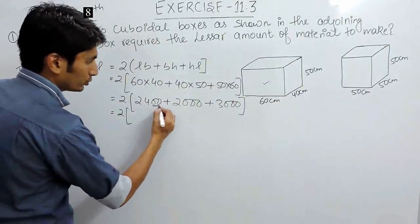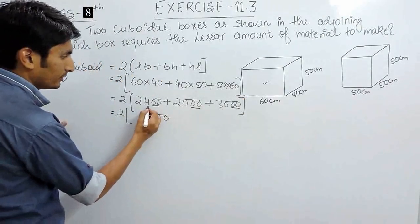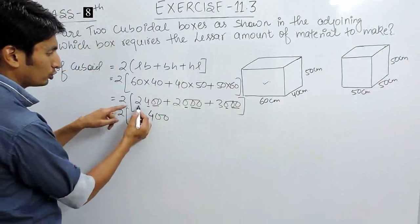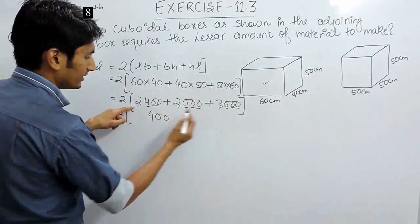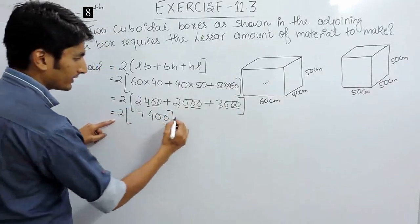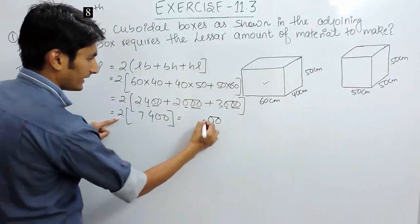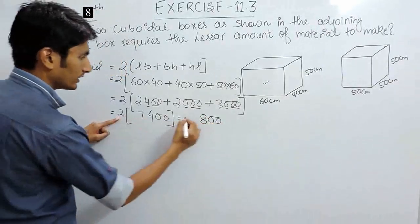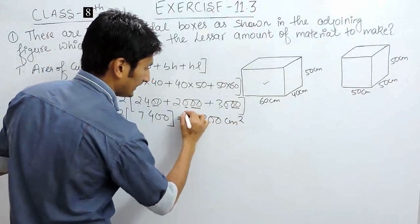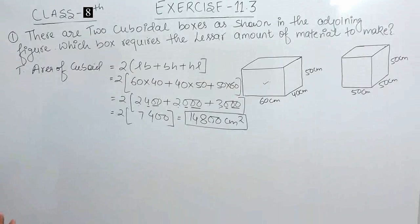Now, solving this, 2 will be as it is. This will be 4 plus 0 is 4, and 2 plus 2 is 4 plus 3 is 7. Now, this multiplied by 2 will be equals to 0 and 0, and 4 to the 8, and 7 to the 14.